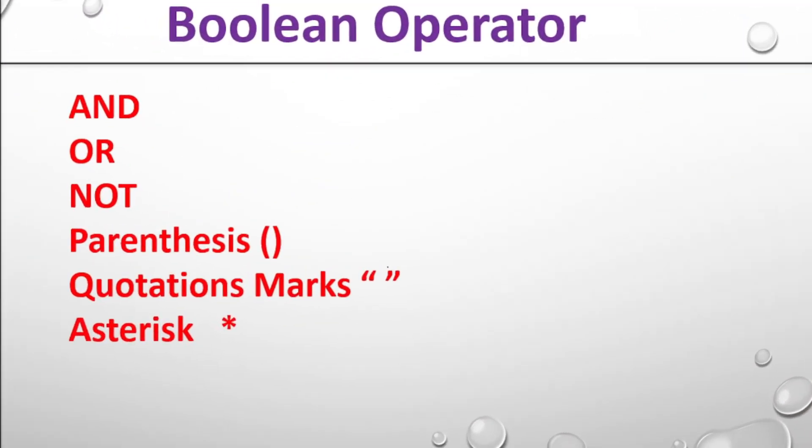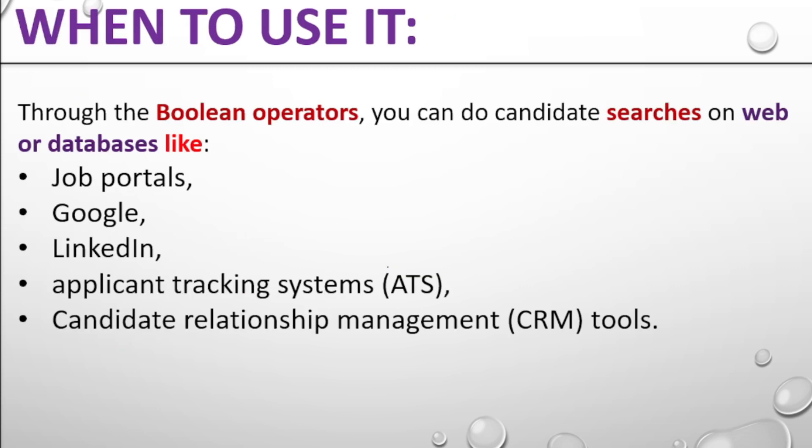Next is boolean operators. The main boolean operators are AND, OR, NOT, and others including quotation marks, parenthesis, and asterisk. These are the boolean operators we use for recruitment sourcing: AND, OR, NOT, parenthesis, quotation marks, and asterisk.